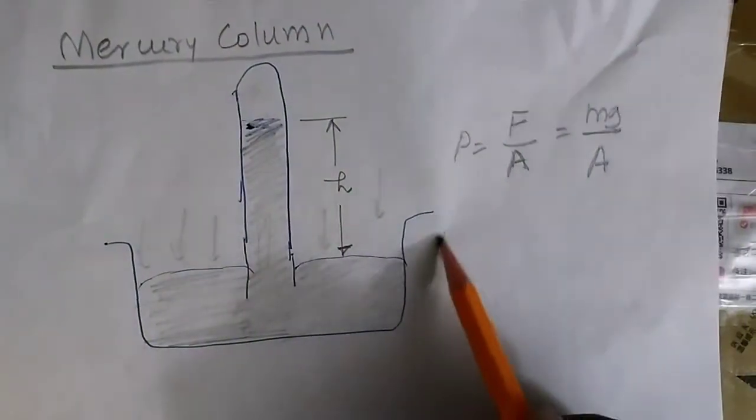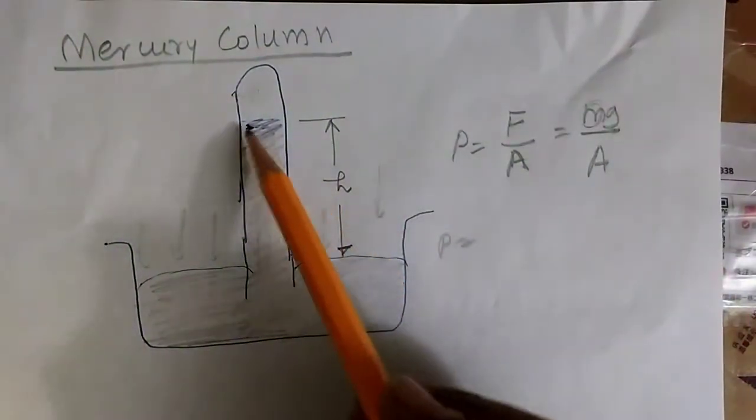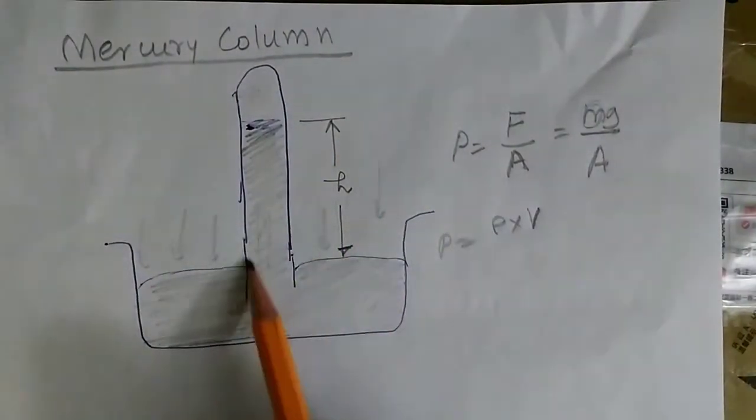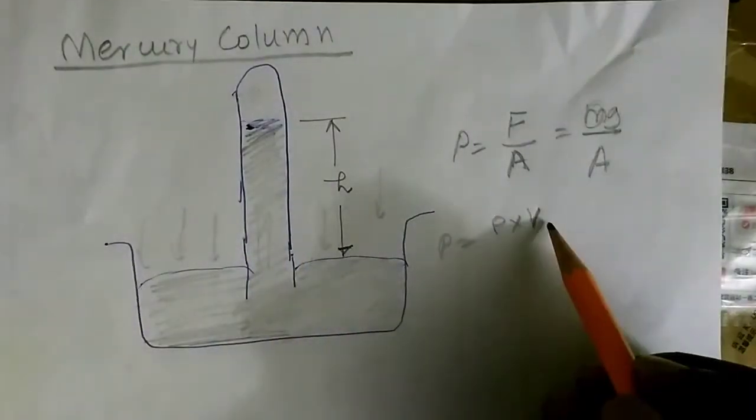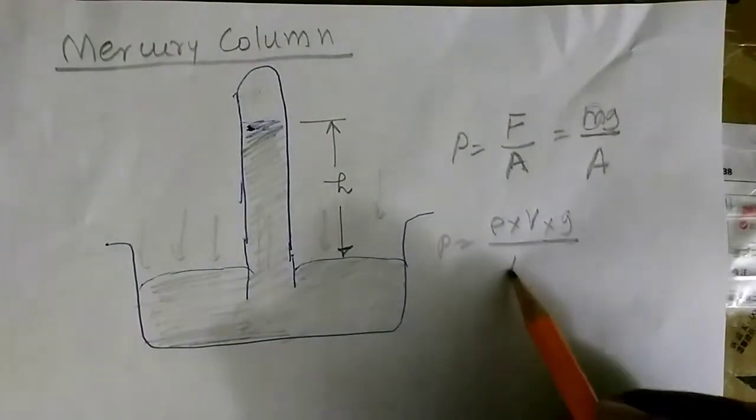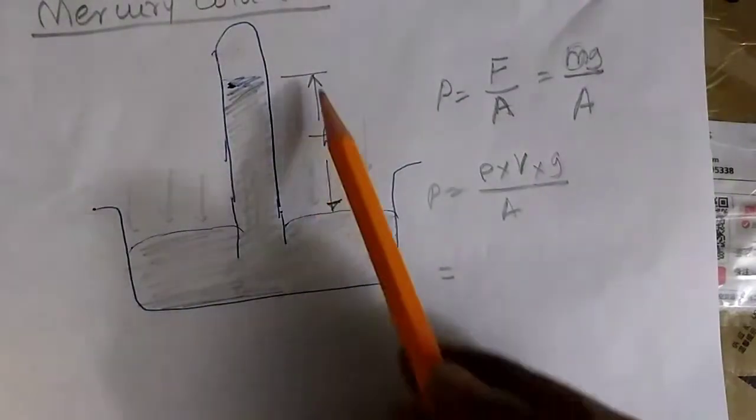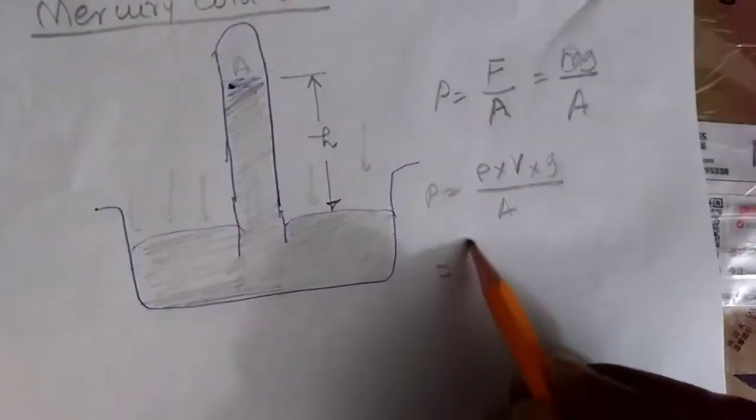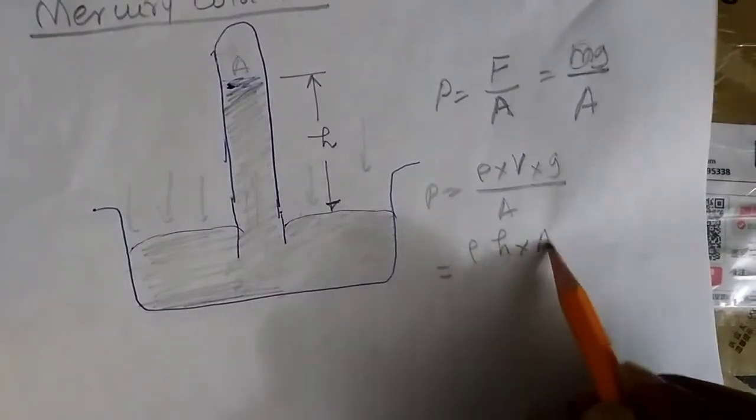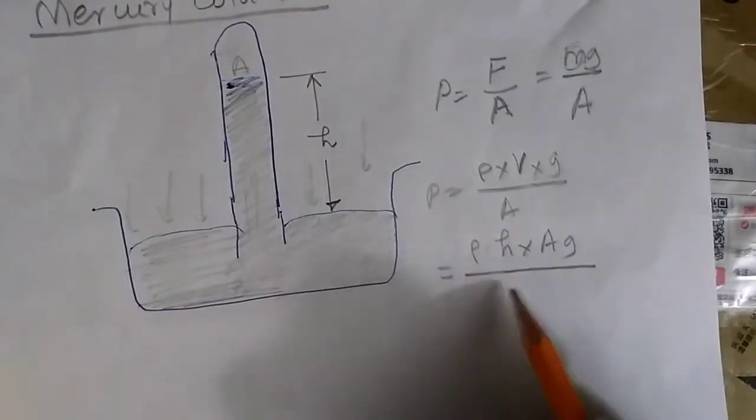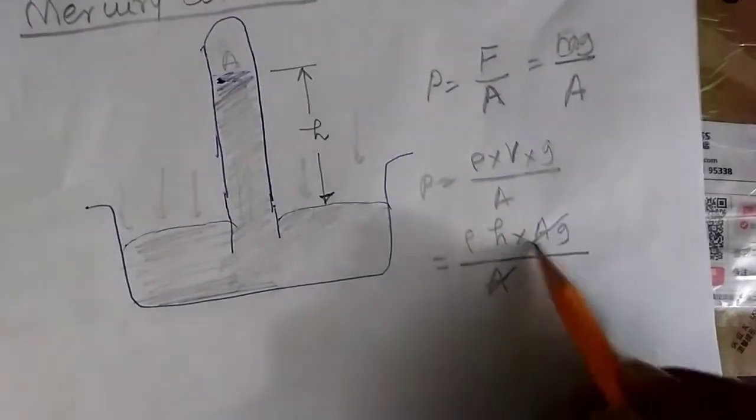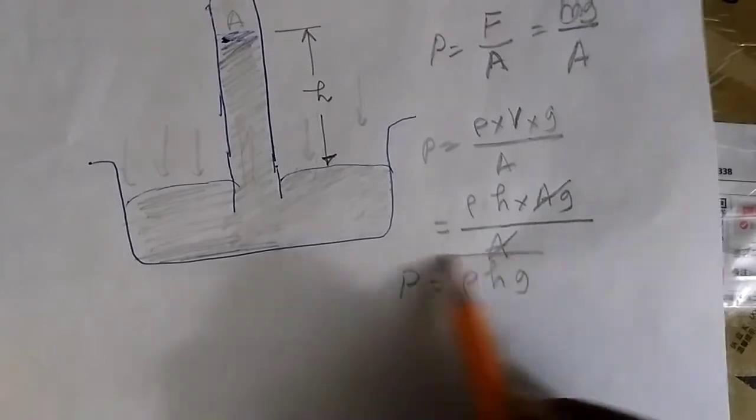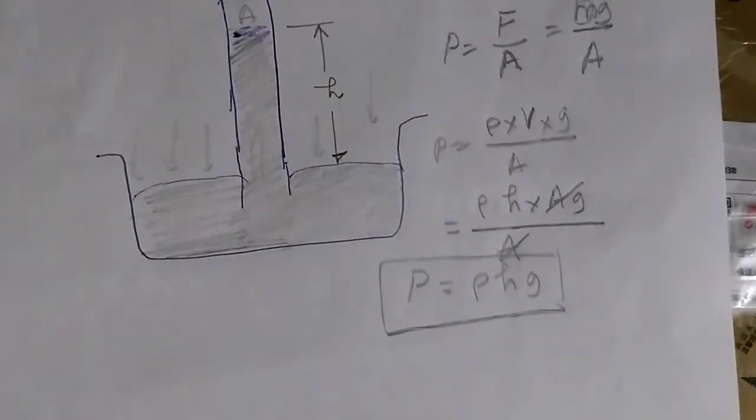This mass M we can write as rho into volume, where rho is the density of the mercury, multiplied by G, divided by this area. This volume V can be written as this height of the mercury column multiplied by this area A. So it becomes rho into height h multiplied by area into G divided by area A. A cancels and it becomes the pressure is equal to ρhg. This is the formula for the mercury column.